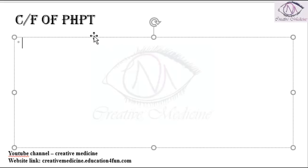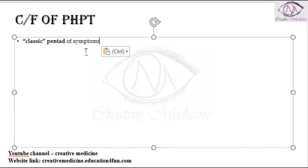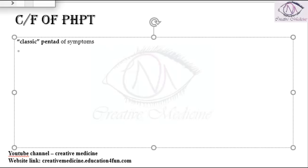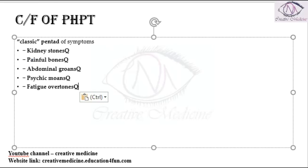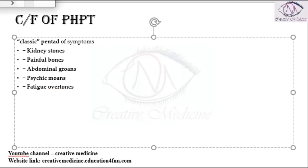A patient with primary hyperparathyroidism has a classical pentad of symptoms. These five symptoms include: kidney stones, painful bones, abdominal groans (abdominal pain), psychic moans, and fatigue overtones — these are the classic pentad of symptoms of primary hyperparathyroidism.